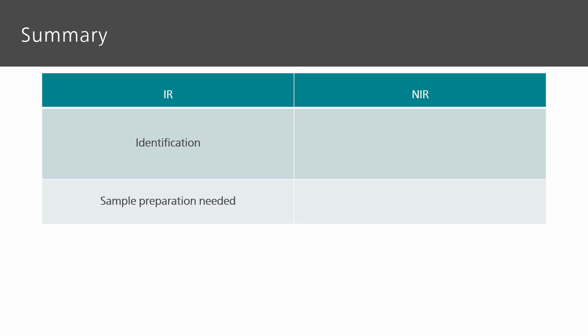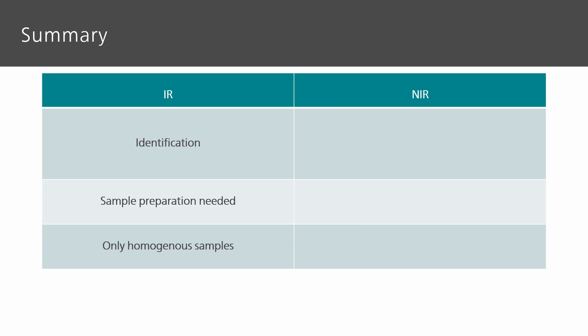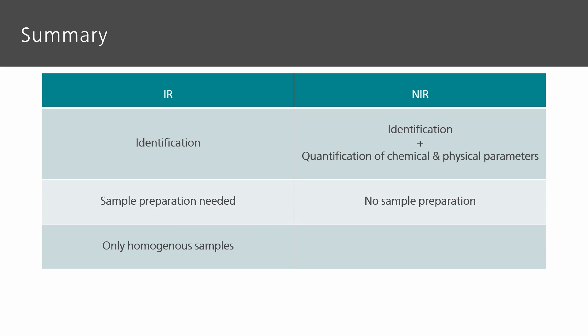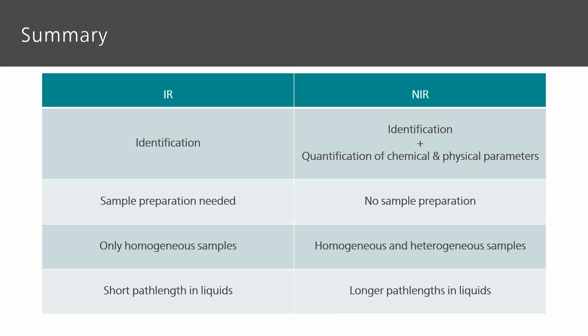To summarize, IR spectroscopy is well suited for the identification of substances. However, sample preparation is usually needed, but can be time consuming. Also, the analysis of heterogeneous solid samples is a challenge for IR spectroscopy. On the contrary, NIR spectroscopy can be used for the identification of molecules and quantification of chemical and physical parameters, without needing any sample preparation. Because of the increased penetration depth of the NIR light, the analysis of heterogeneous solid samples is also possible. When dealing with liquid samples, longer path lengths can be used for NIR spectroscopy compared to IR spectroscopy — a strong argument for using NIR spectroscopy for online measurements in industrial process environments.